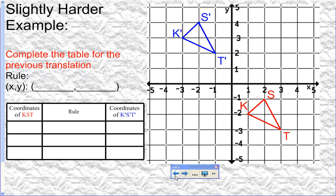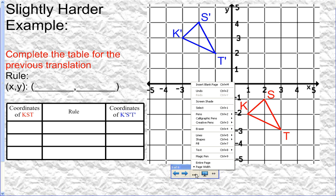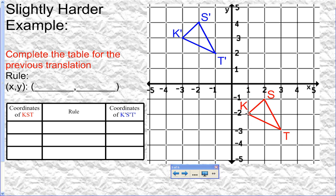I'm going to carry this graph over to the next page. The rule we came up with was (x minus 4, y plus 5) — the x value goes down by four and the y value goes up by five. The new piece on this page is a table that organizes this information, because we need to know how to handle all the different aspects of translations.